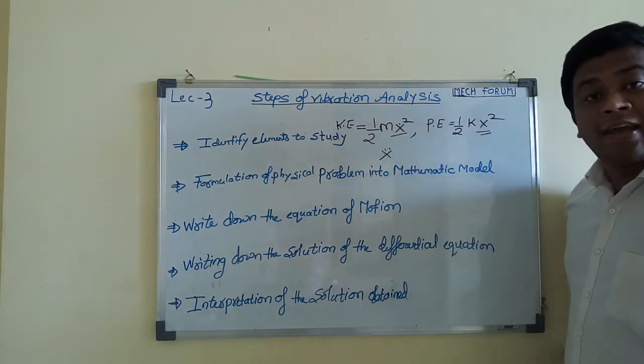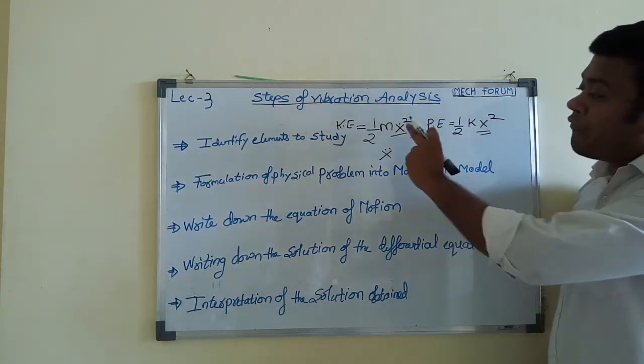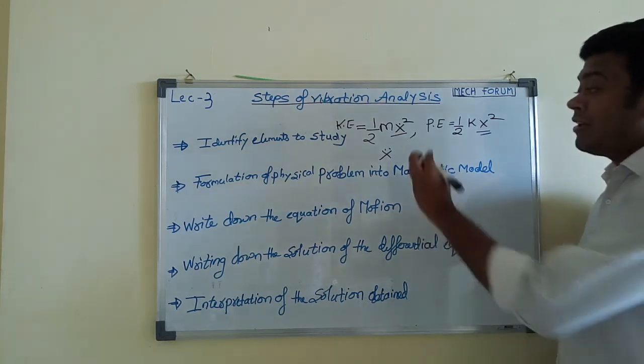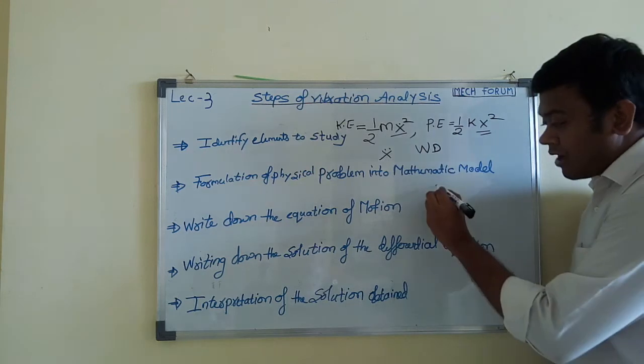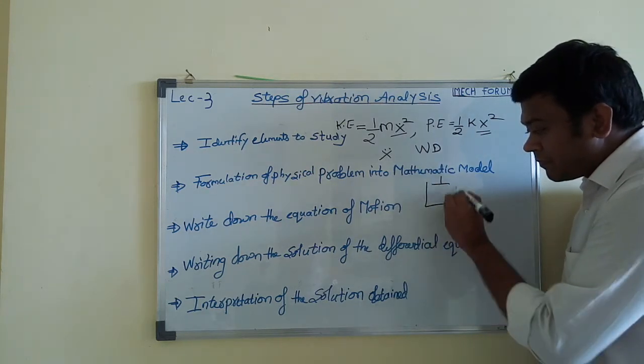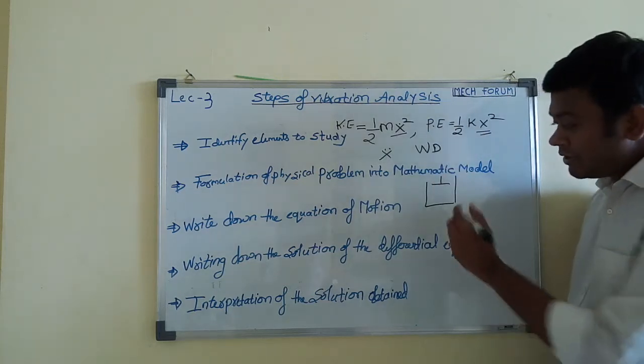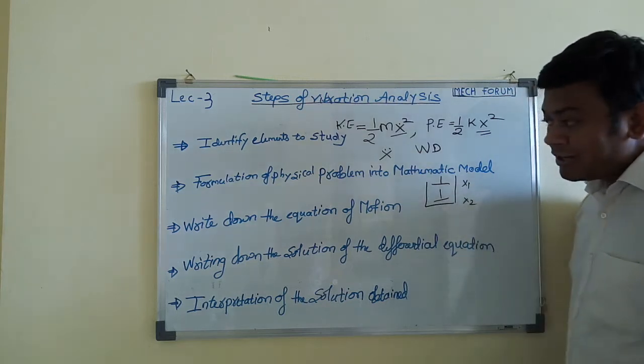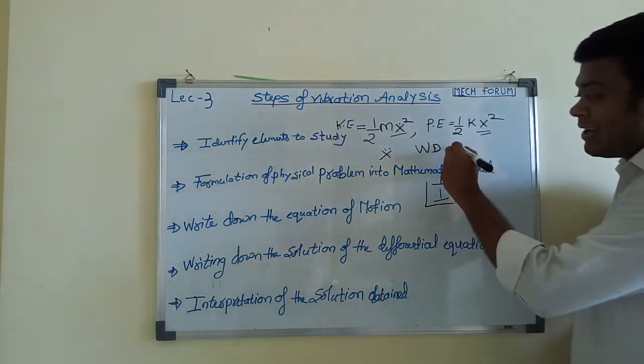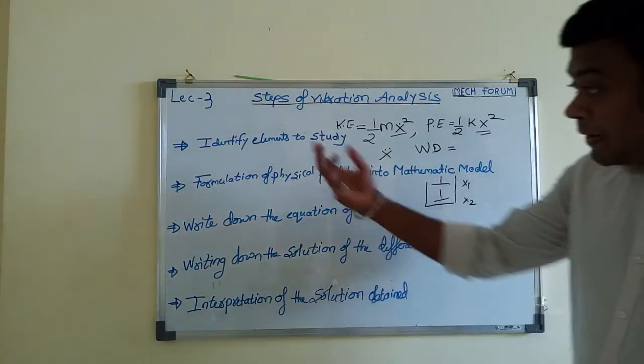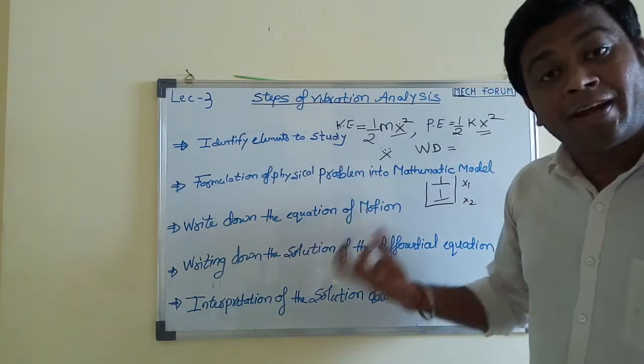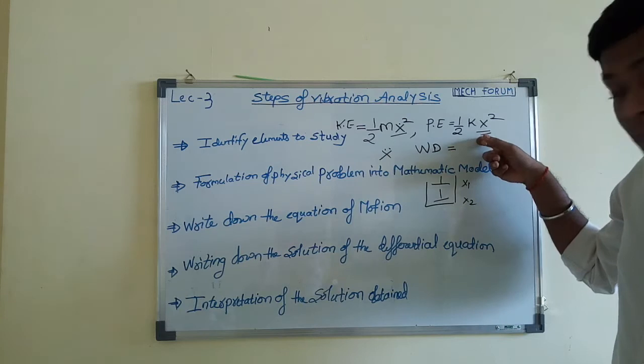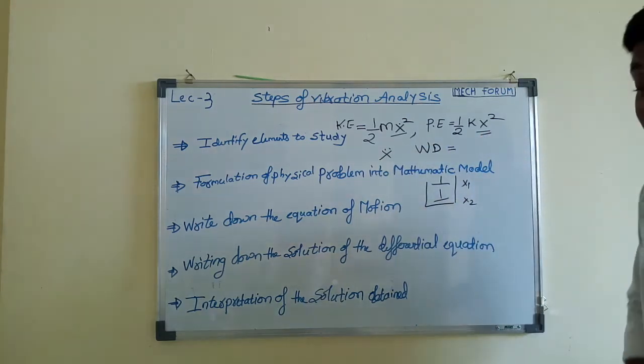In the whole vibration, you will deal with x, x dot, and x double dot—displacement, velocity, and acceleration. And your damper possesses the work done. After getting the vibration, it will travel from x1 to x2. Whatever work is required from x1 to x2, that is the work done by the damper.